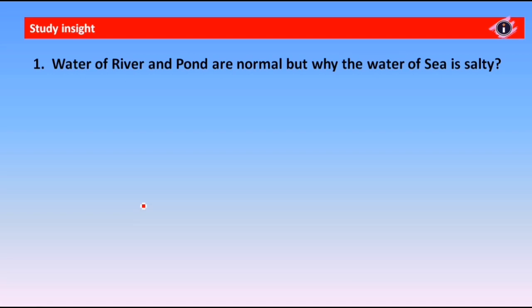The first question is: water of rivers and ponds is normal, but why is the water of the sea salty? Normally, river and pond water is fresh, but sea water is not.